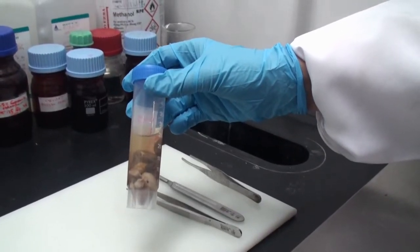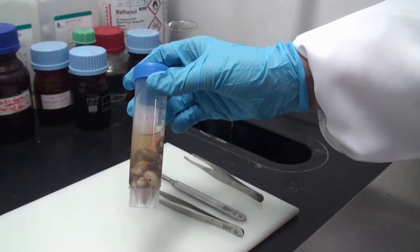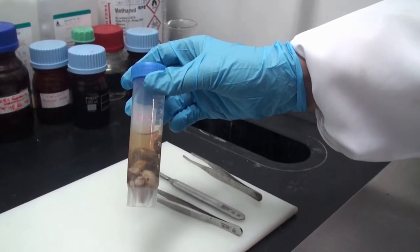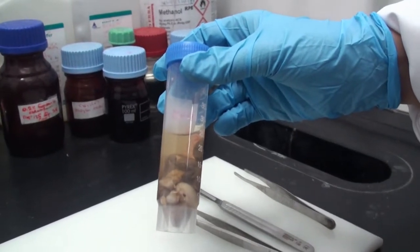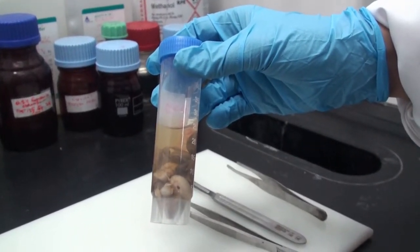So first we have the specimens in formalin and we take them from fresh samples and now we're going to remove each sample at a time and work on it, a process called grossing.